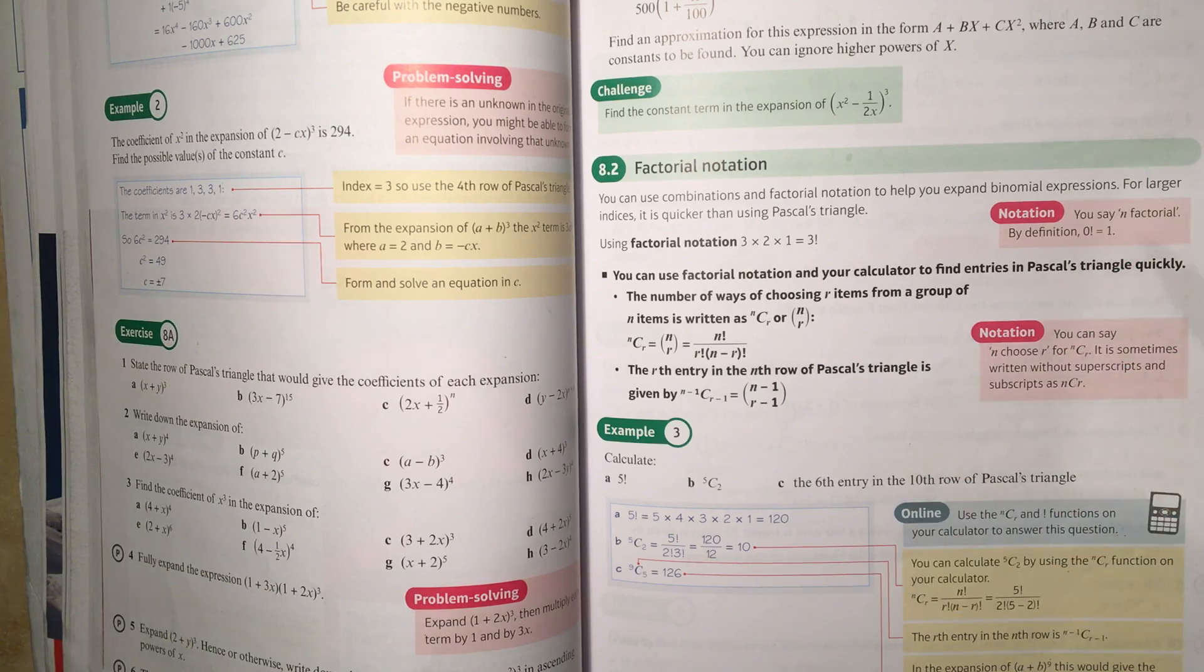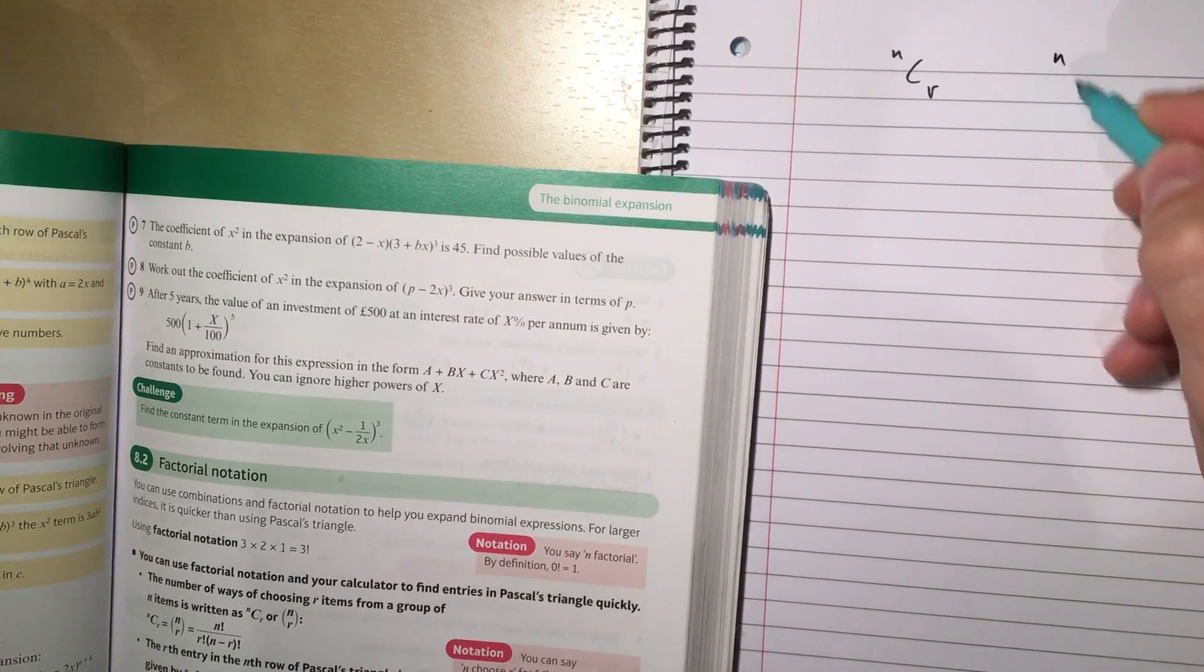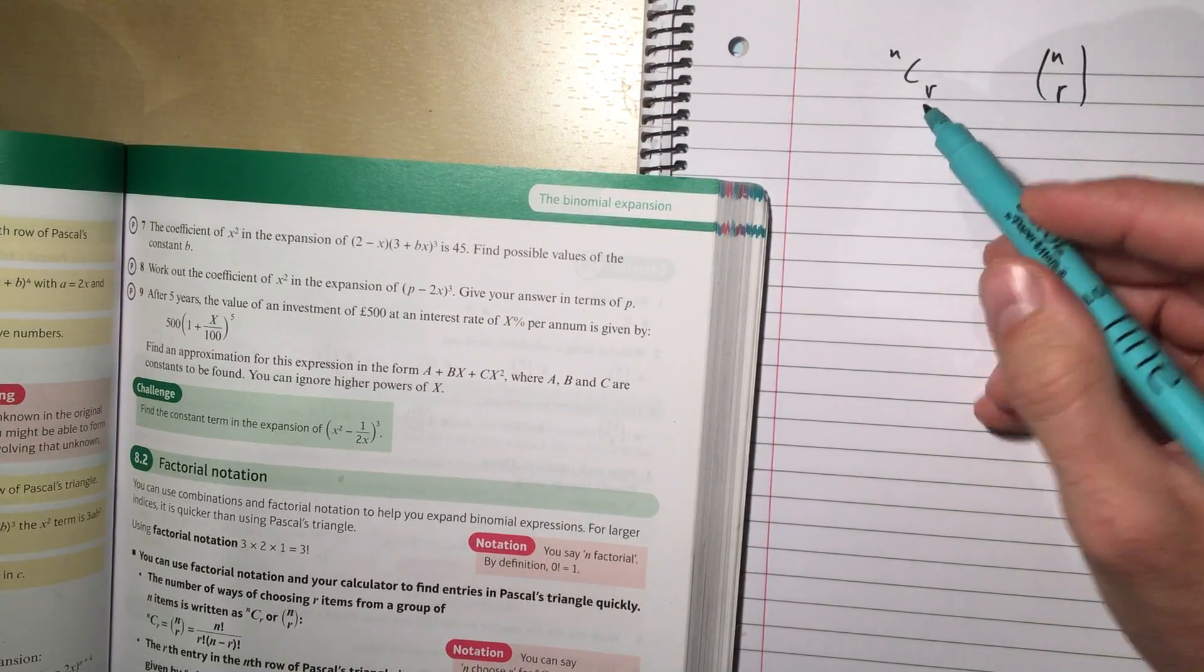Now, what this is, is that we have nCr, which is also written as n r like a vector, is pronounced n choose r.